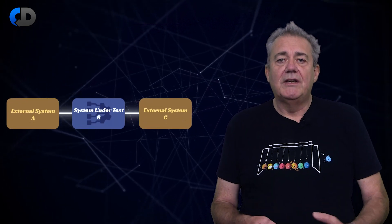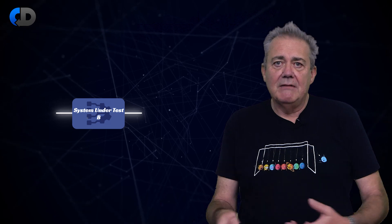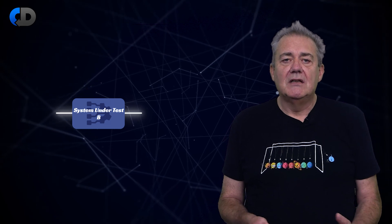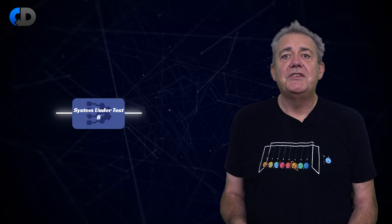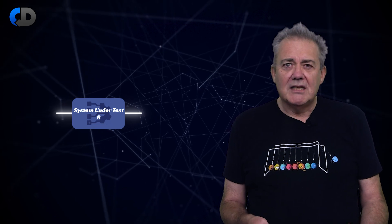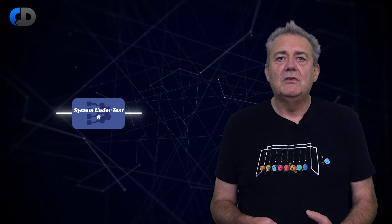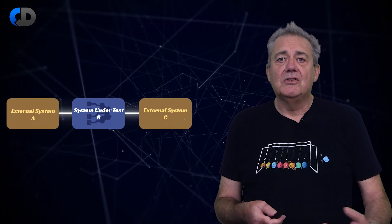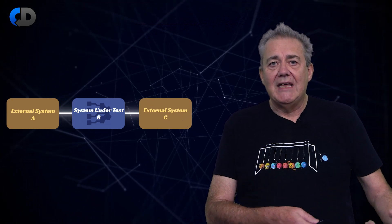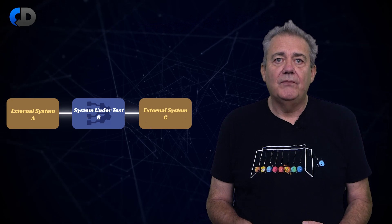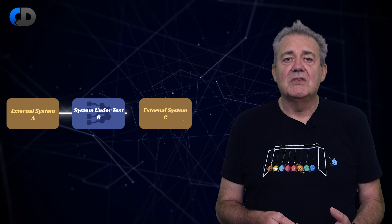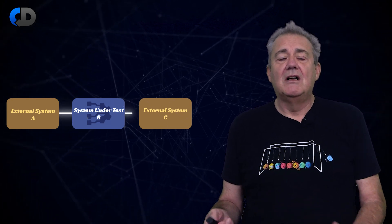There's another problem. If we are working on a system that is downstream from System A and upstream from System C, and this is the only way that we test, then we can't test System B properly at all. We'd like to test it when it's facing difficulties as well as when everything's working smoothly — for example, what happens if System A sends our system garbage. But we can't do that if there's a real System A in place. We'd also like to know how our system copes when it can't establish or loses a connection to System C, but if the connection is working fine, we can't test this either.